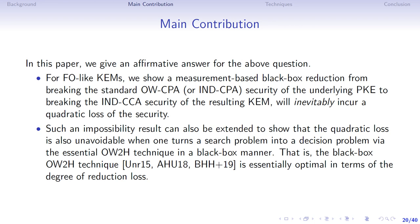In this paper, we give an affirmative answer to the above question. In detail, for FO-like KEMs, we show that any measurement-based black-box reduction from breaking the standard CPA security of PKE to breaking the CCA security of KEMs inevitably incurs a quadratic security loss. Such an impossibility result can also be extended to show that quadratic security loss is also inevitable when reducing a search problem to a decision problem, where the essential one-way-to-hiding technique is used in a black-box manner. That is, the current black-box one-way-to-hiding technique is essentially optimal in terms of the degree of reduction loss.